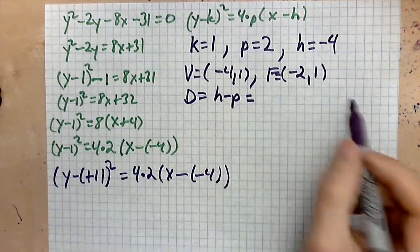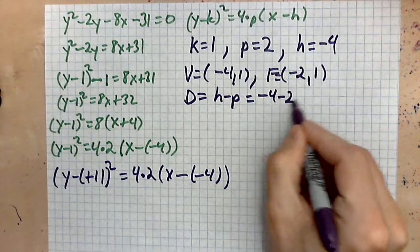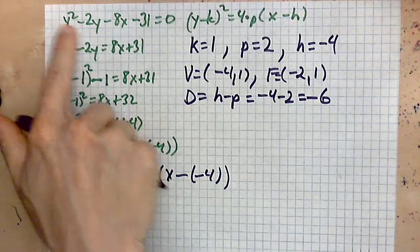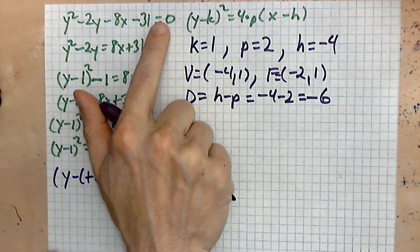h minus p. So you do h: negative four minus two is negative six. So this is the parabola.